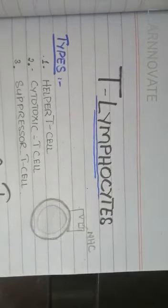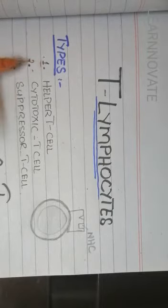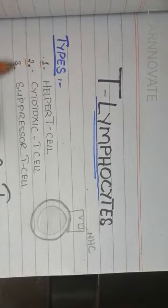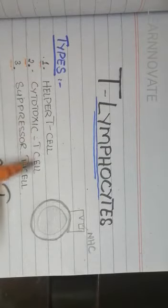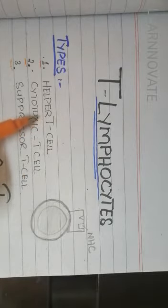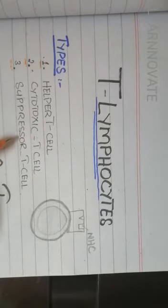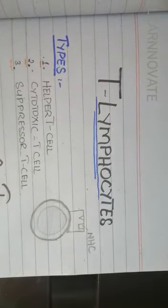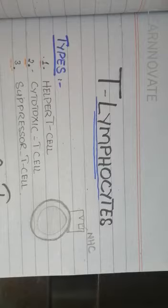Before discussing the functions, we need to know the types of T lymphocytes. There are three types: the helper T cell, the cytotoxic T cell, and the suppressor T cell. The cytotoxic T cell is also called the killer cell. The helper T cell helps the process of immunity, and the suppressor T cell suppresses excess immunity to prevent autoimmune diseases where antibodies form against the body's own cells.